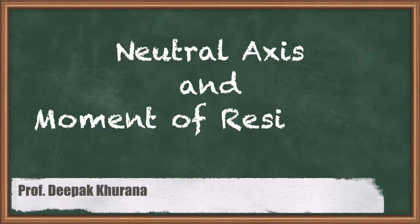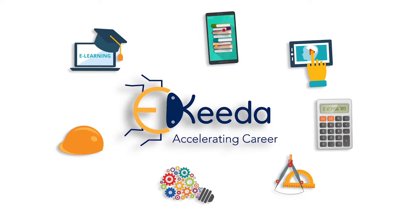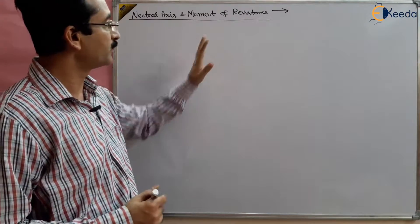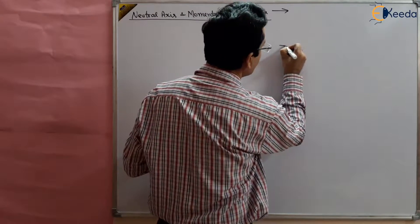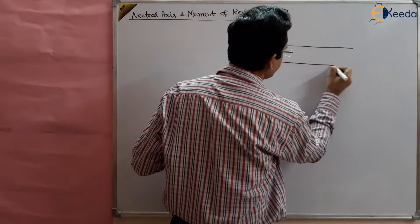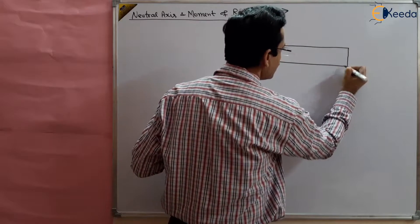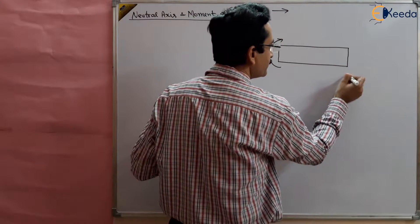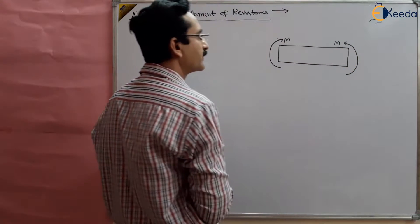Hello students, in this session we are going to study the angle of twist, what is neutral axis, and what is moment of resistance. We have a beam at which the bending moment is applied, and we are talking about the theory of simple bending where a pure bending is applied.